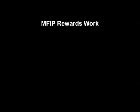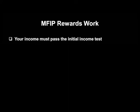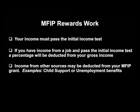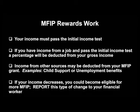MFIP rewards work. One of the program requirements means that you must pass the initial income test. If you have received income from a job and you passed the initial income test, a percentage will be deducted from your gross income. The remaining income will be deducted from your MFIP grant. If you have income from another source, that income may be deducted dollar for dollar from your MFIP grant. Examples of this other income would be child support or unemployment benefits. If your income decreases, you could be eligible for more MFIP. You will need to report and verify that your income has decreased to your financial worker so that they can determine if you are eligible for more MFIP.